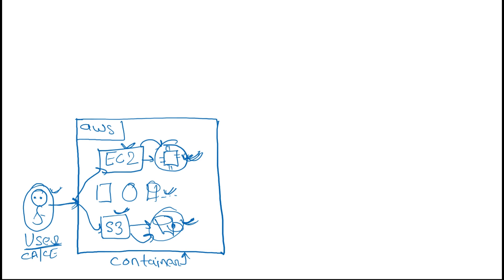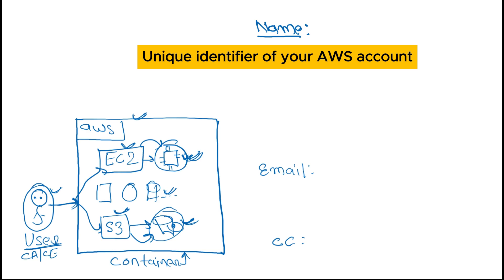Now, to create an AWS account we need three things: first, a name; second, a unique email ID; and third, a credit card.